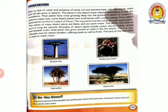The stems of many desert plants are fleshy and can store water. So for desert plants, the stems are the part that stores water. This allows the plants to survive long dry periods. Examples of desert plants include cactus, thorny bushes, acacia and baobab trees. Date palms also grow around oases in the hot desert. This is a very valuable tree for desert dwellers, offering shade as well as fruits. The bark of the date palm is used to make ropes.